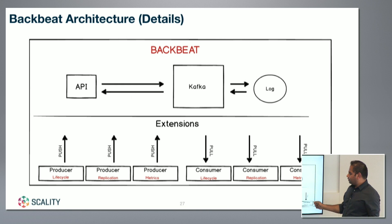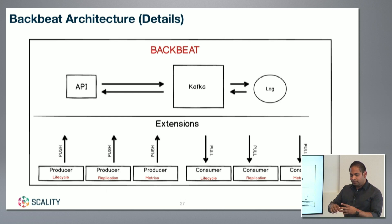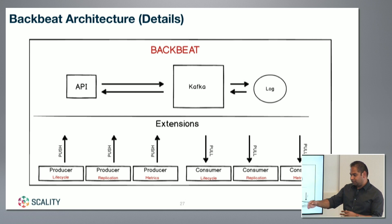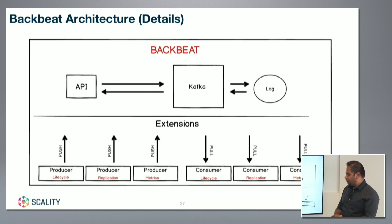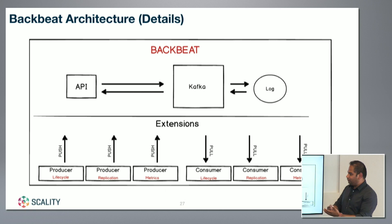We're introducing BackBeat for asynchronous replication, but the design has been done so that we can write multiple extensions. The project is open source, so you can write multiple extensions and extend the core engine to achieve many use cases. The first use case we're addressing is replication. A second extension could be lifecycle to AWS S3. Another example: if you're building your own metrics collection with your own Elasticsearch, you can write your own extension to read from the BackBeat Kafka and write it to your Elasticsearch.